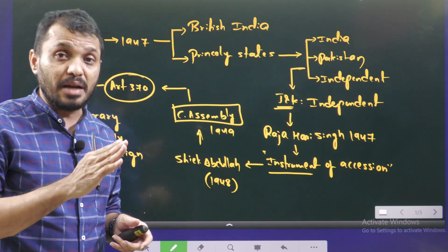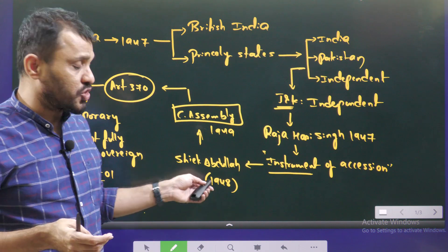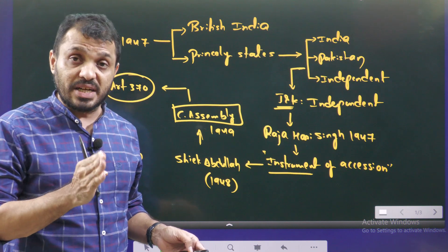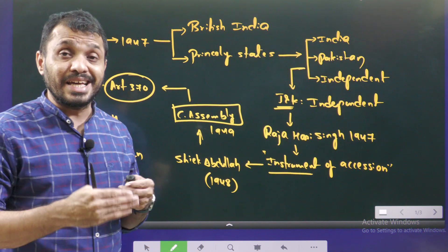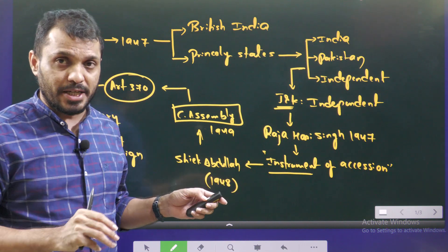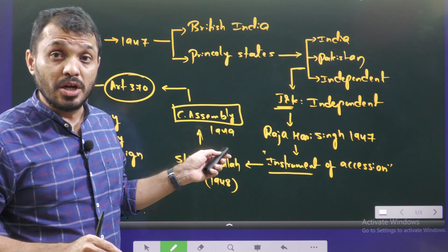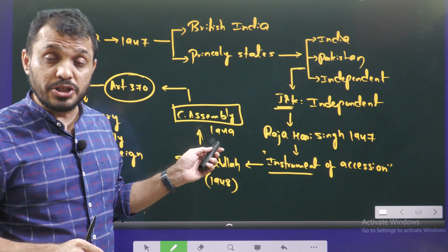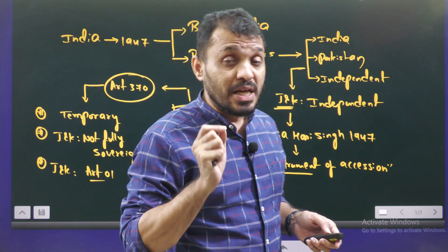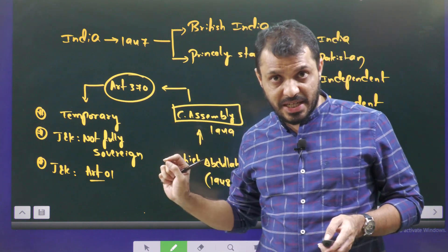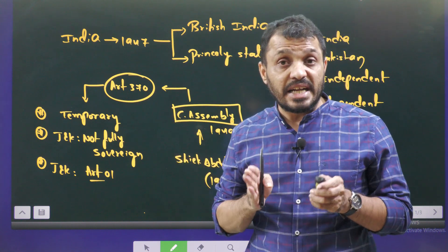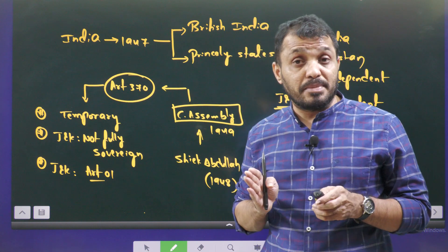In 1948, an interim government was established in Jammu & Kashmir, led by then Prime Minister Sheikh Abdullah — the father of Farooq Abdullah. In 1949, when the Constituent Assembly was working on the Constitution, three members from Jammu & Kashmir were nominated to it. They negotiated for special articles for Jammu & Kashmir people, which resulted in the existence of Article 370 in the Indian Constitution.